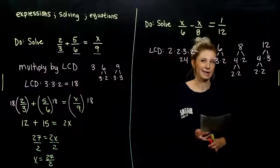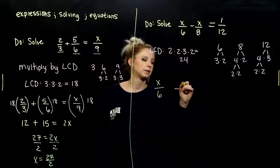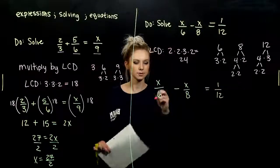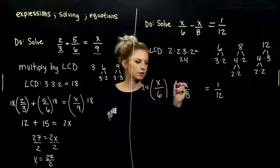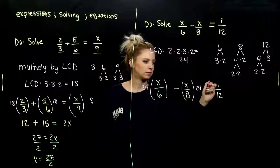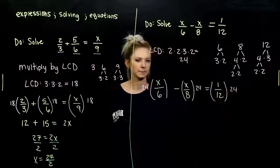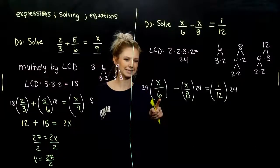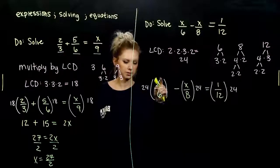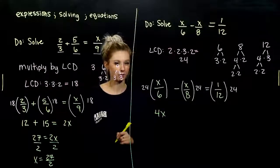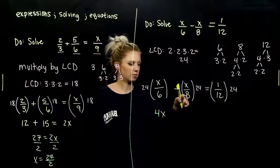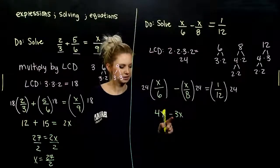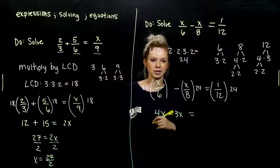So again, every single term on the left, every single term on the right, multiplied by our LCD in this case, which is 24. If we do the division first, it'll make life a little bit easier. So I've got 24 divided by 6 gives me 4, 4 times x, 4x. Got rid of the fractions. 24 divided by 8 gives me 3, 3 times x, negative 3x. And we had a minus sign, so we need to take that into account. And we can combine those like terms eventually. And how about over here? 24 divided by 12, we're left with 2.